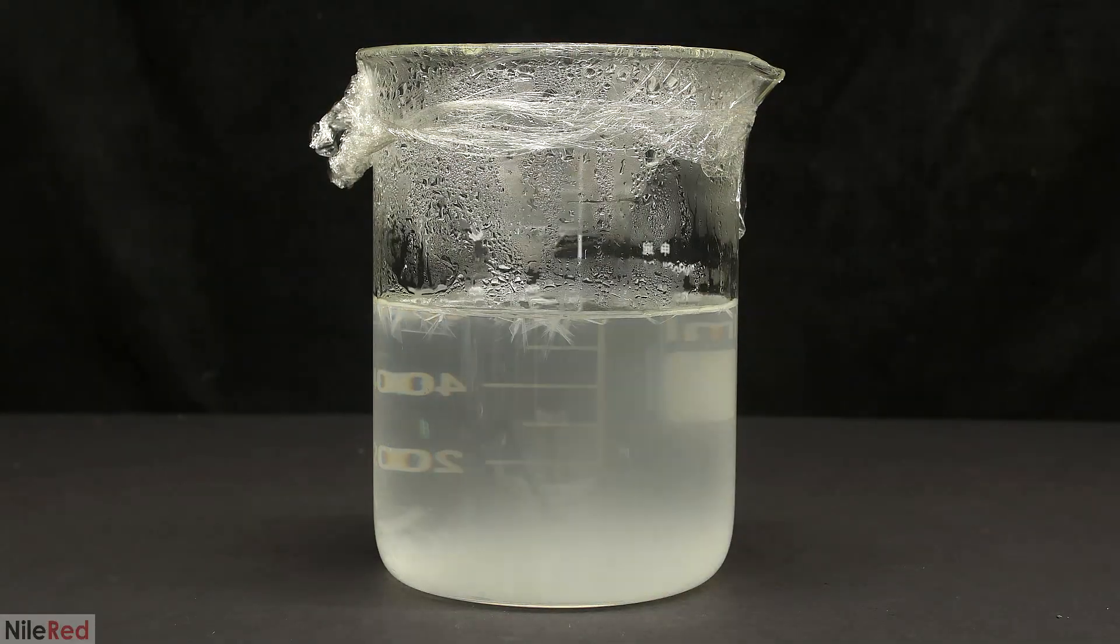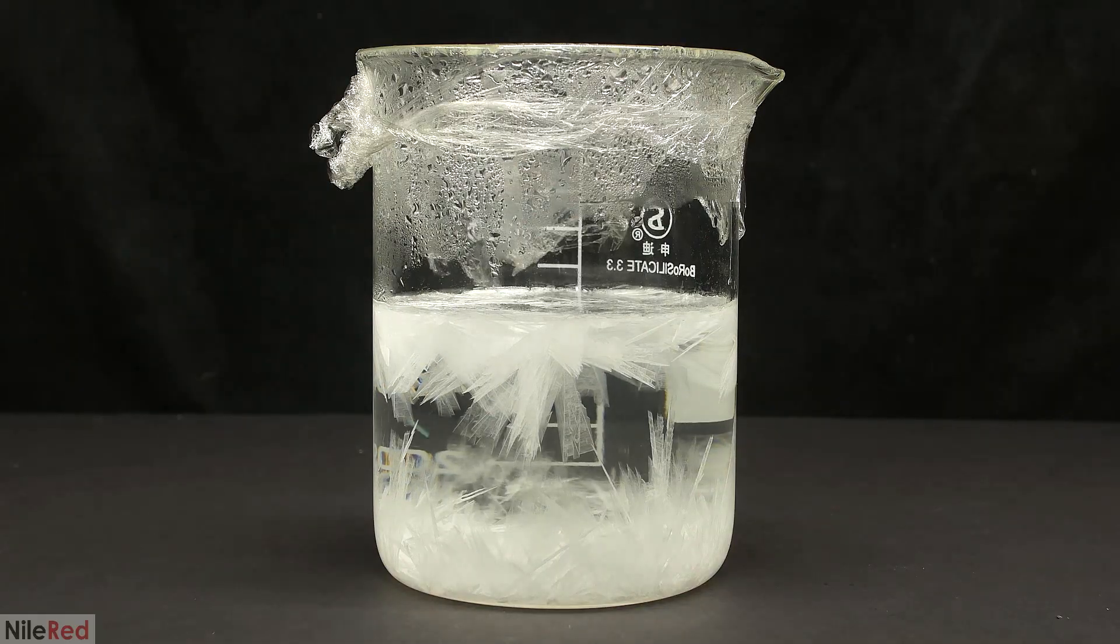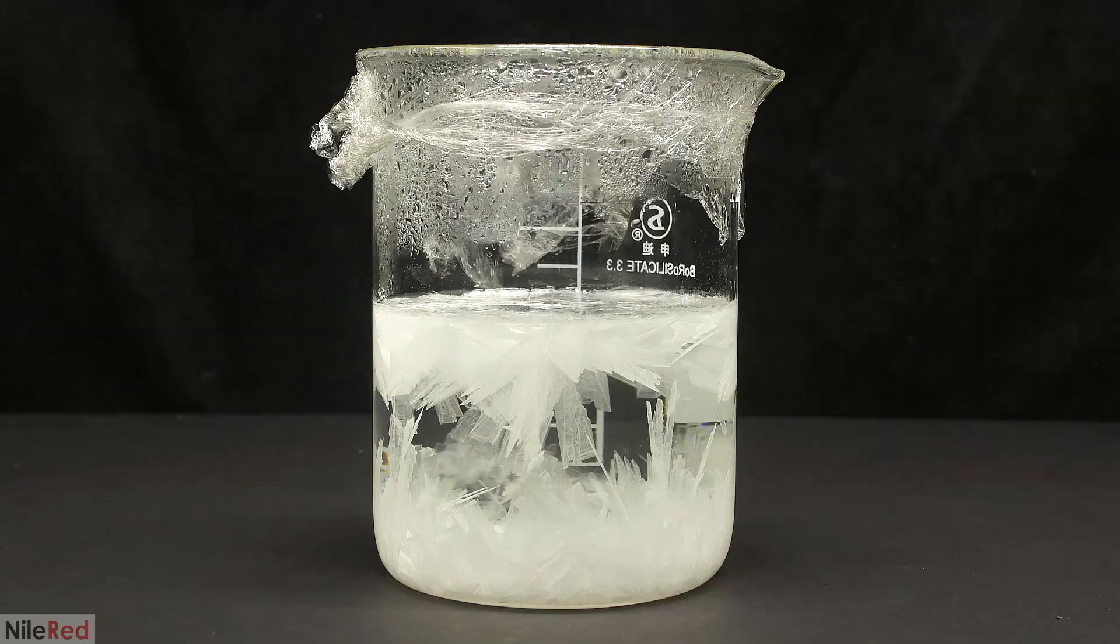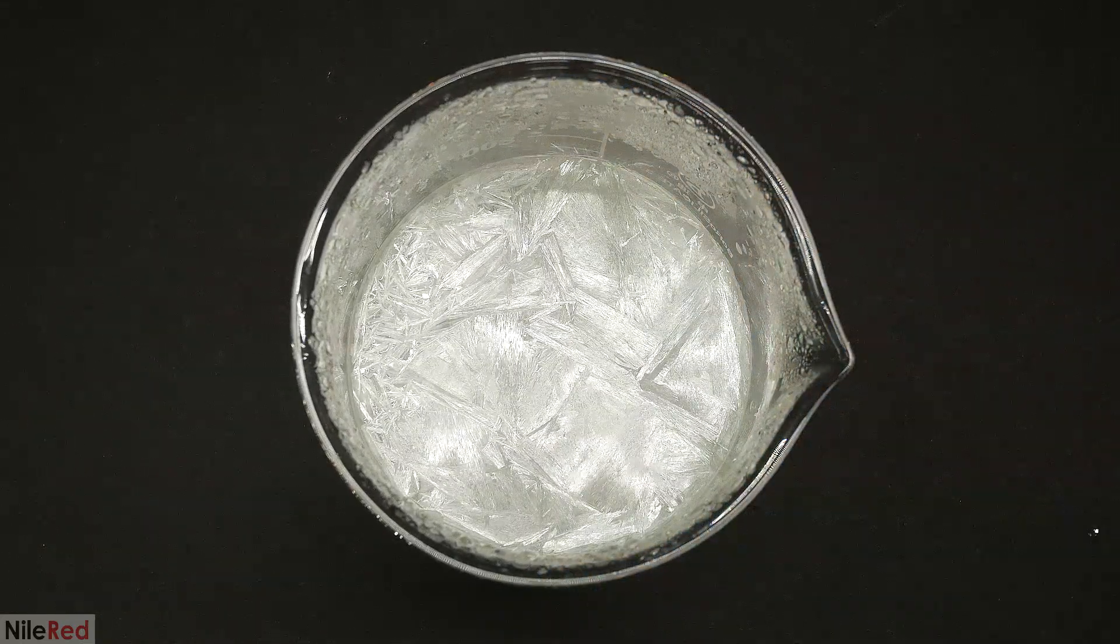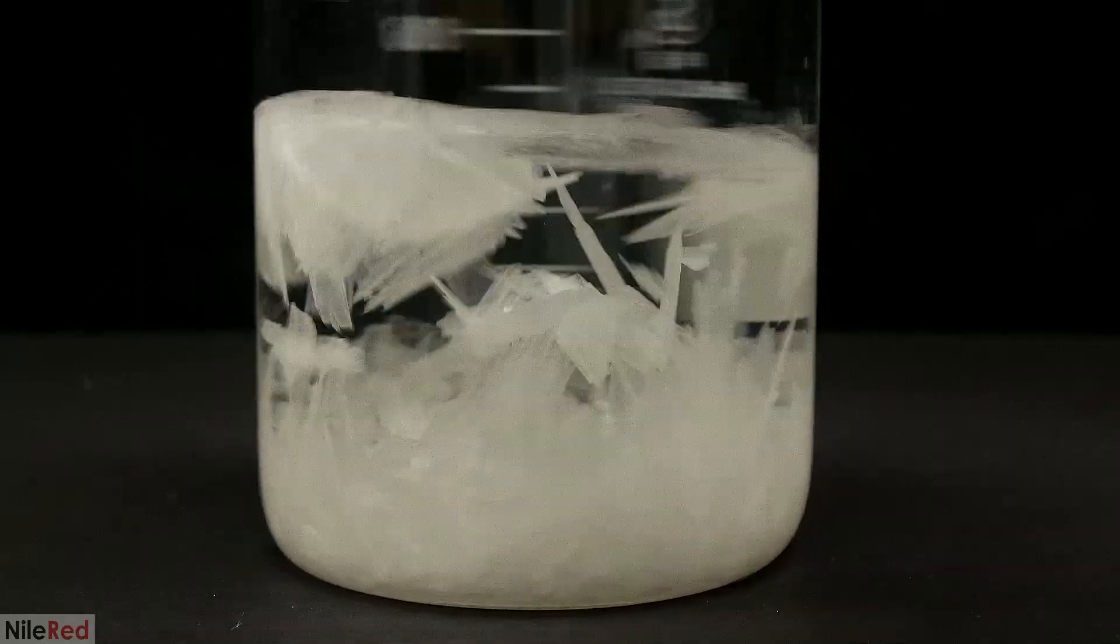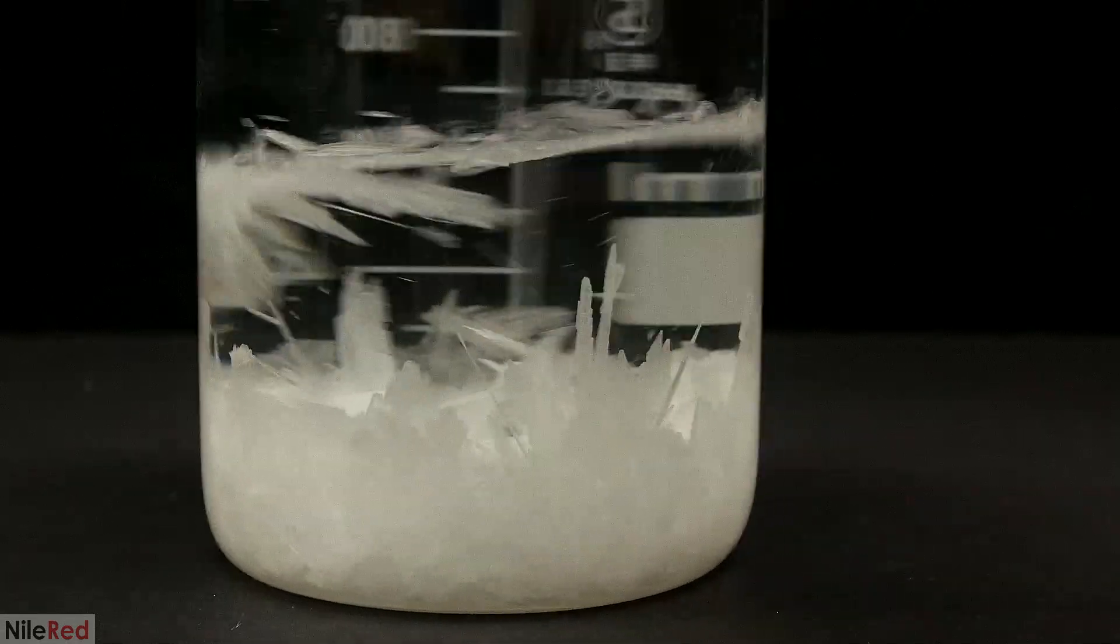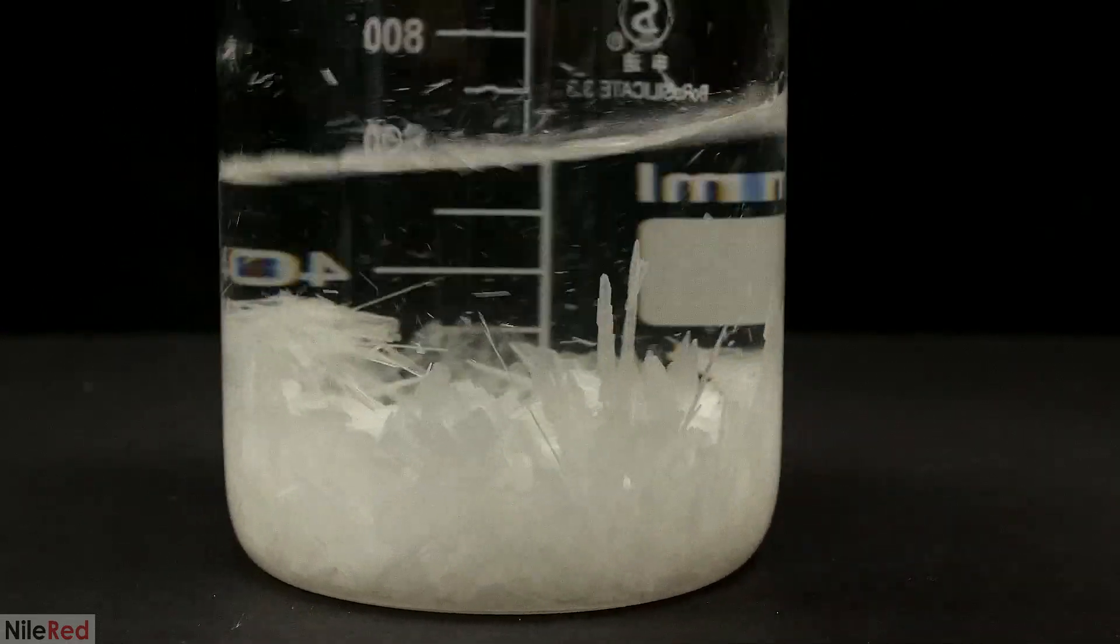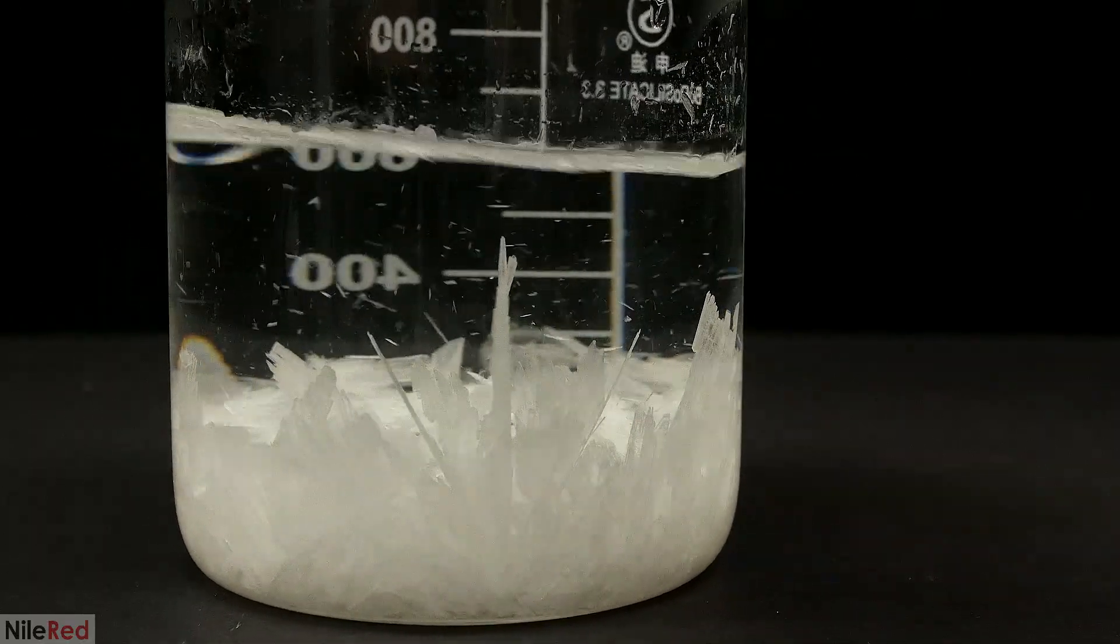As the solution cools, the solubility of acetanilide will slowly decrease and we should start to see something precipitate out. I took a time lapse and this is what happened over the course of about two or three hours. When it was done, there was a very nice layer of crystals at the top. I shook it around to knock everything to the bottom and then I cooled it to about 5C for a few hours. By cooling it, I am further decreasing the solubility of the acetanilide and it should help to get out a little bit more.